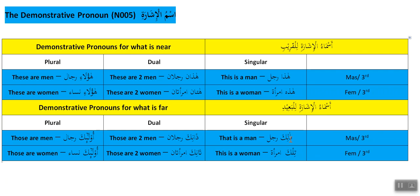So to summarize: for a single far masculine word, say 'thalika' instead of 'hadha.' So instead of 'hadha rajulun' we say 'thalika rajulun — that is a man.' If two men are in a distance, instead of 'hadhani' we say 'dhanika rajulani' — those are two men. And instead of 'haulai rijalun' when the men are far, we say 'ula'ika rijalun' — those are men.